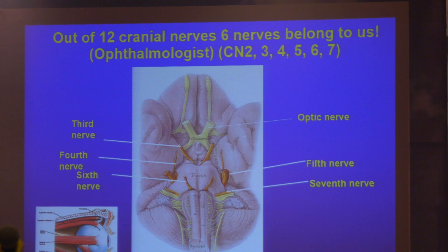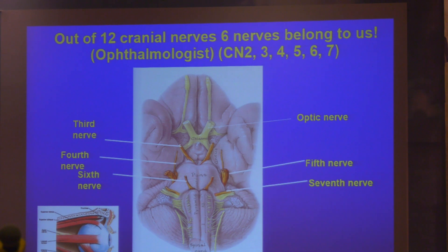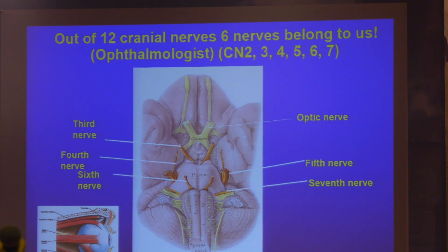The third, fourth, and sixth cranial nerves are related to our extraocular muscles, and the fifth — the first part — is for corneal sensation. And the seventh: usually the lower motor neuron type of facial palsy. So all facial palsy cases will come to the ophthalmologist first, then go to the neurologist.